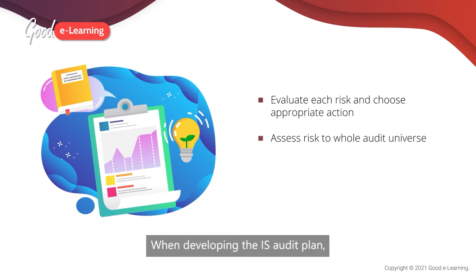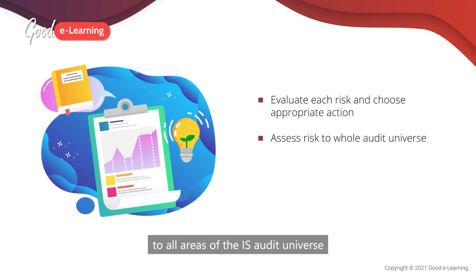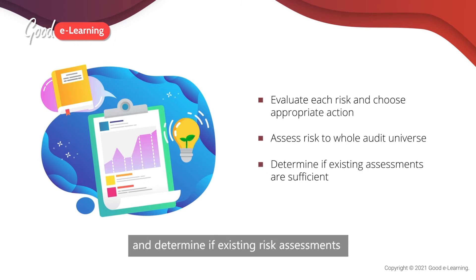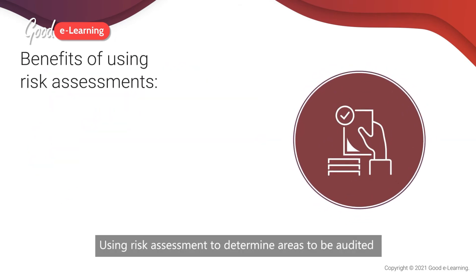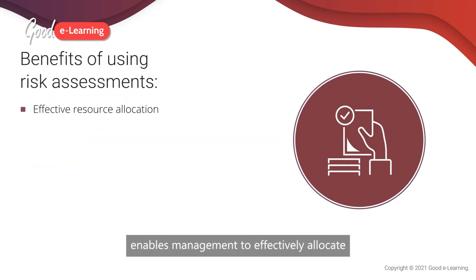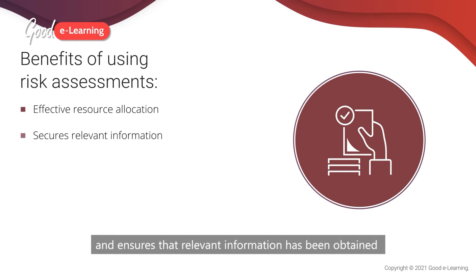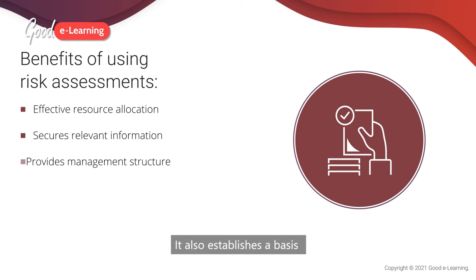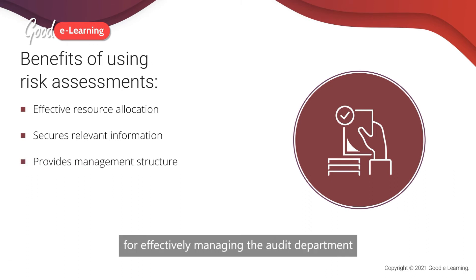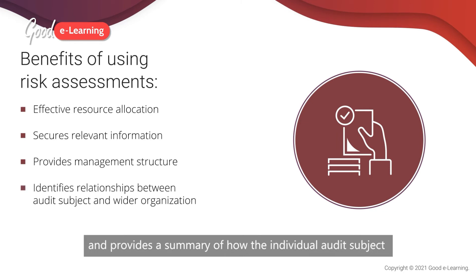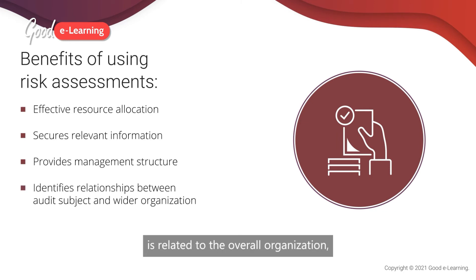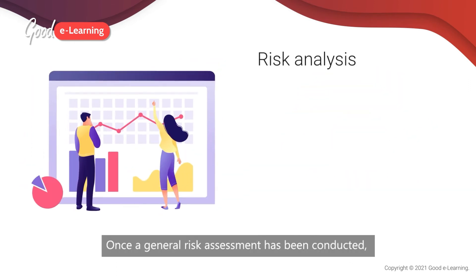When developing the IS audit plan, the auditor should assess the risk to all areas of the IS audit universe and determine if existing risk assessments provide sufficiently reliable assessments. Using risk assessment to determine areas to be audited enables management to effectively allocate limited audit resources and ensures that relevant information has been obtained from all levels of management. It also establishes a basis for effectively managing the audit department and provides a summary of how the individual audit subject is related to the overall organisation and to the business plans.